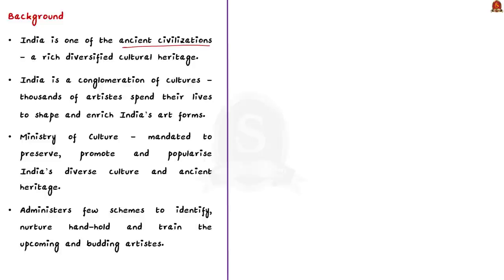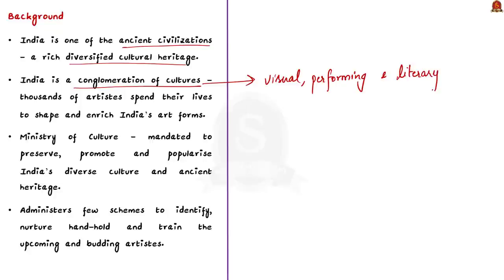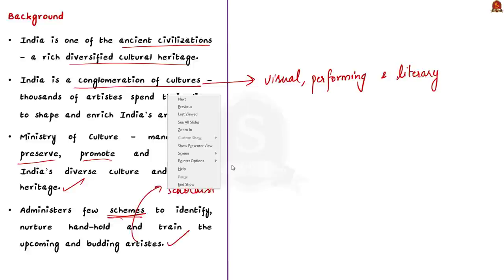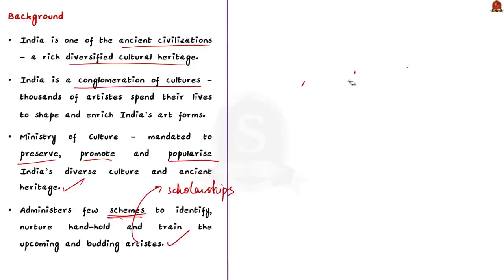India is one of the ancient civilizations of the world with a rich diversified cultural heritage. Unlike most other countries that have homogeneous communities, India is a conglomeration of cultures. Indian art includes visual, performing and literary arts with multiple art types in each category, and thousands of artists over the years have shaped and enriched these art forms. The Ministry of Culture is mandated to preserve, promote and popularize India's diverse culture and ancient heritage, administering schemes to identify, nurture and train budding artists through scholarships, fellowships and pensions. But this is not happening in reality.